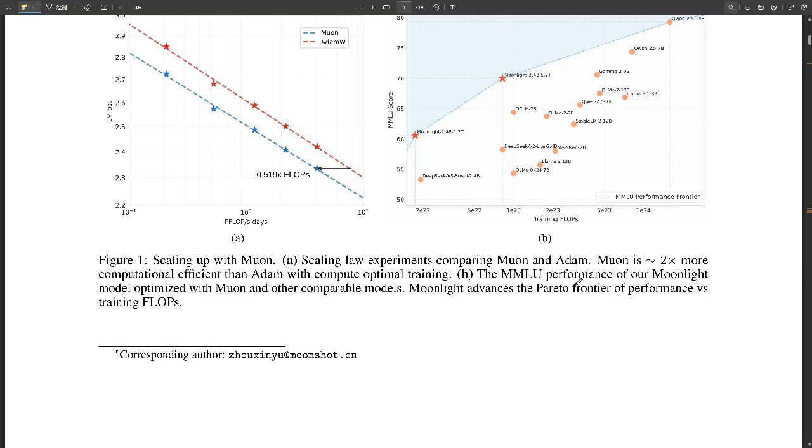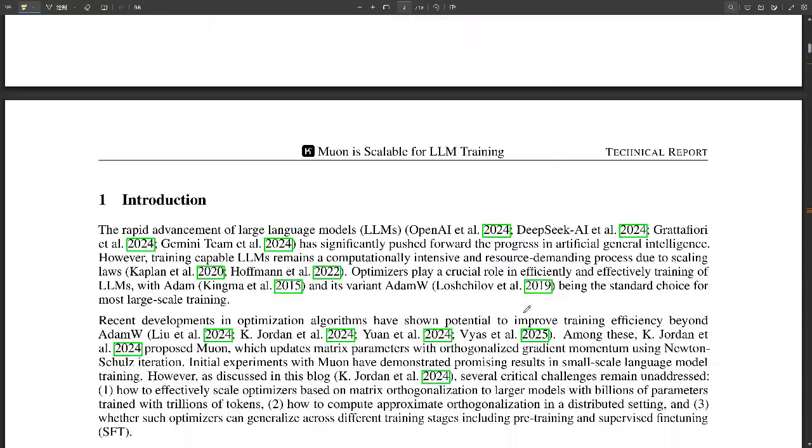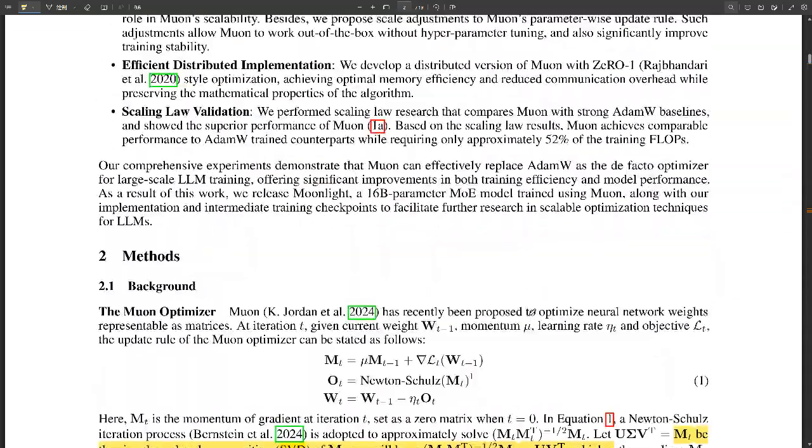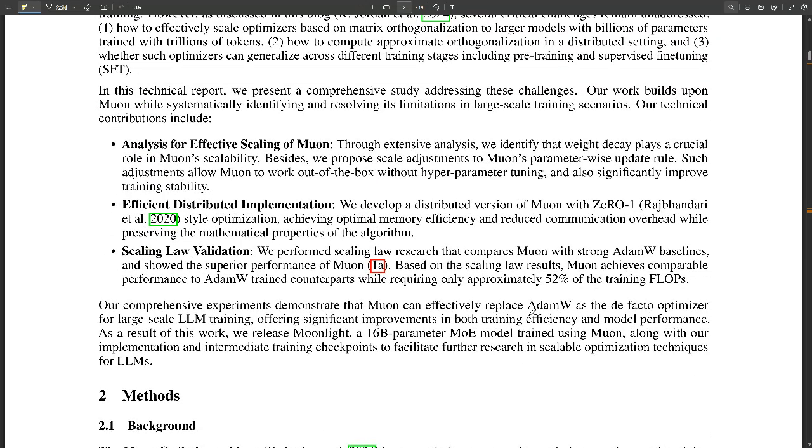They're basically learning from massive amounts of data, like text and code, and they get better the more they learn. There's this thing called scaling laws, which says that the bigger the model and the more data it's trained on, the better it will perform. Right, but there's a ton of data, and that means training these models takes a lot of computing power, which I imagine is not cheap.